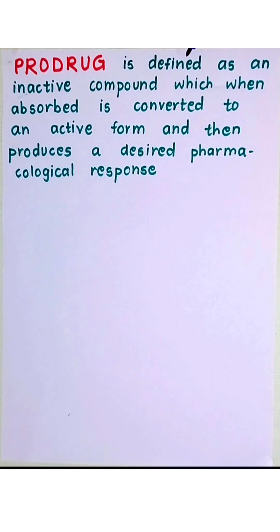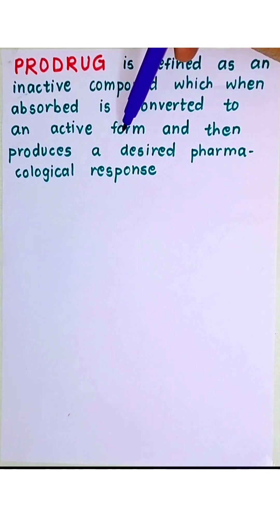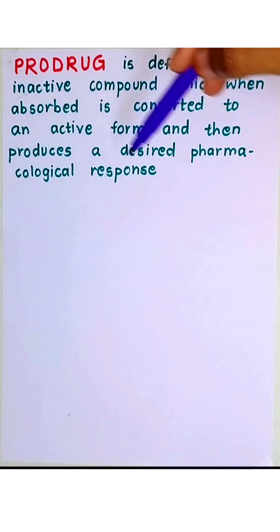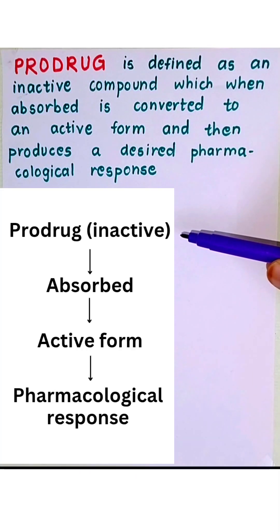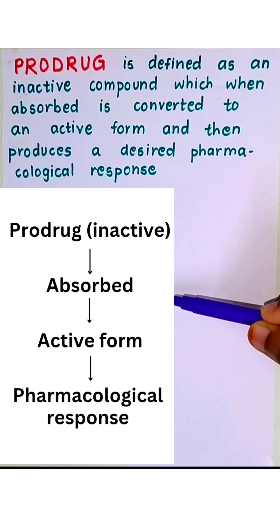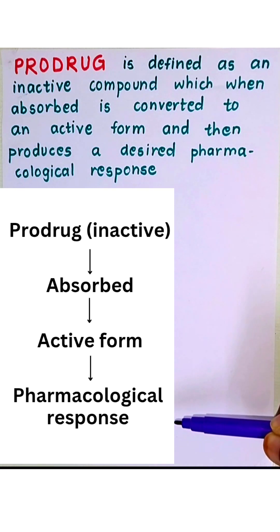Prodrug is defined as an inactive compound which, when absorbed, is converted to an active form and then produces a desired pharmacological response. So a prodrug, which is the inactive form of a compound, when absorbed into the body is converted into the active form and then shows the desired pharmacological response.